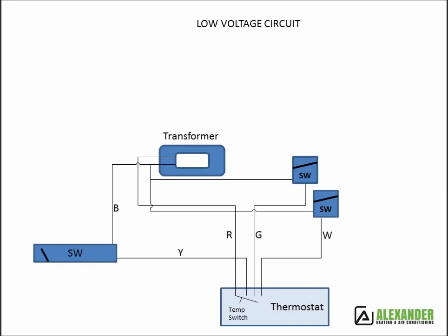The low voltage circuit has two modes. Let's look at the AC mode. In the AC mode, the thermostat sends the signal in two directions. The Y wire turns on the outside fan and compressor. The G wire turns on the indoor fan.